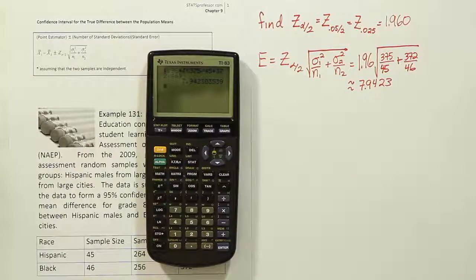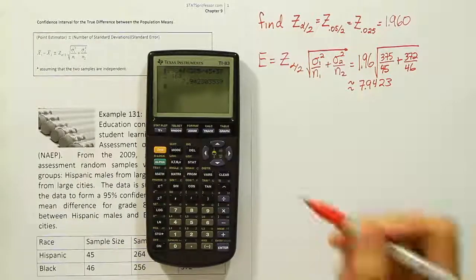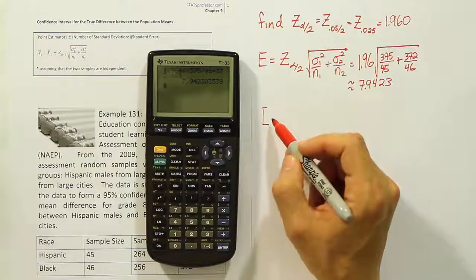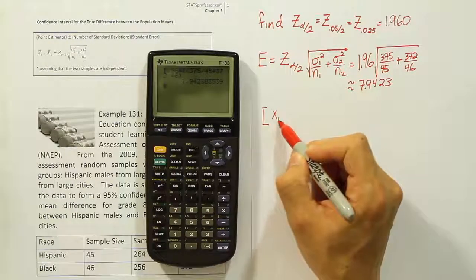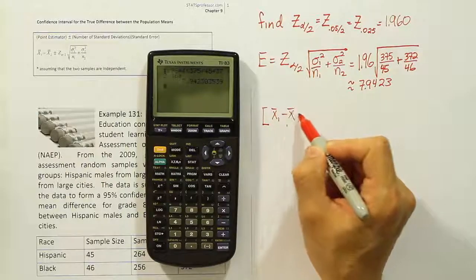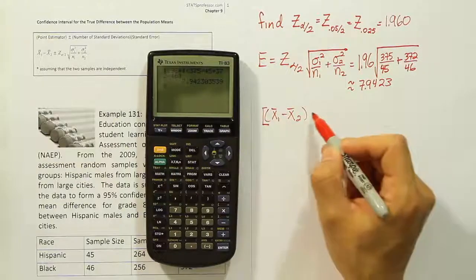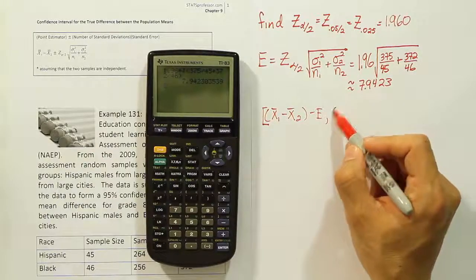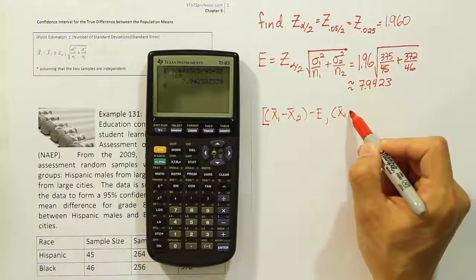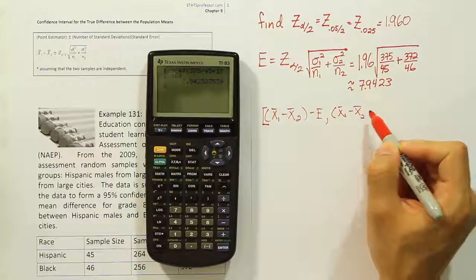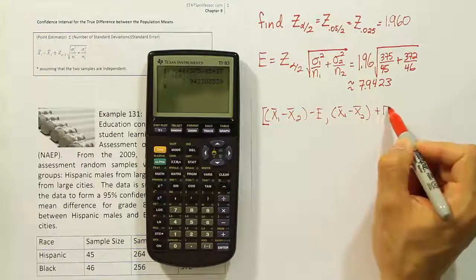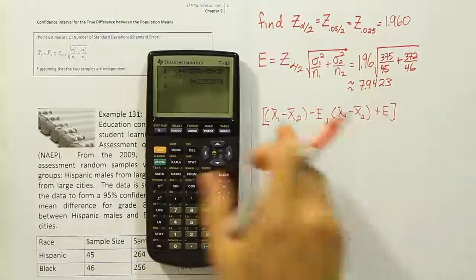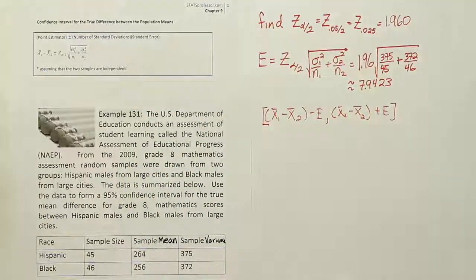Now the last step of the problem is to fill in this important interval. The interval has the following structure. It's going to essentially be x-bar for the first group, minus x-bar for the second group, and then we're going to subtract the error from that. And we're going to do the same thing on the other side: x-bar for the first group, minus x-bar for the second group, plus the error. So we're taking the differences of the sample means, and we're adding and subtracting the error to it.